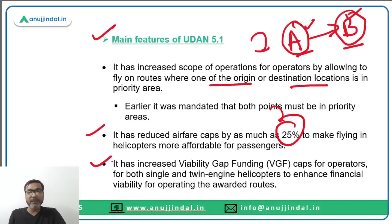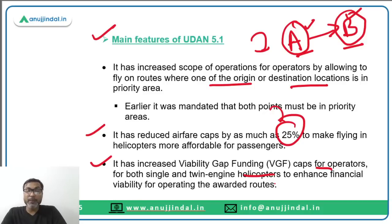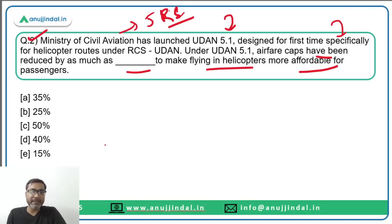UDAN 5.1 has also increased the viability gap funding caps for operators for both single and twin engine helicopters to enhance financial viability, allowing operators to take more loans to operate their helicopters. The correct answer is 25 percent, option B.